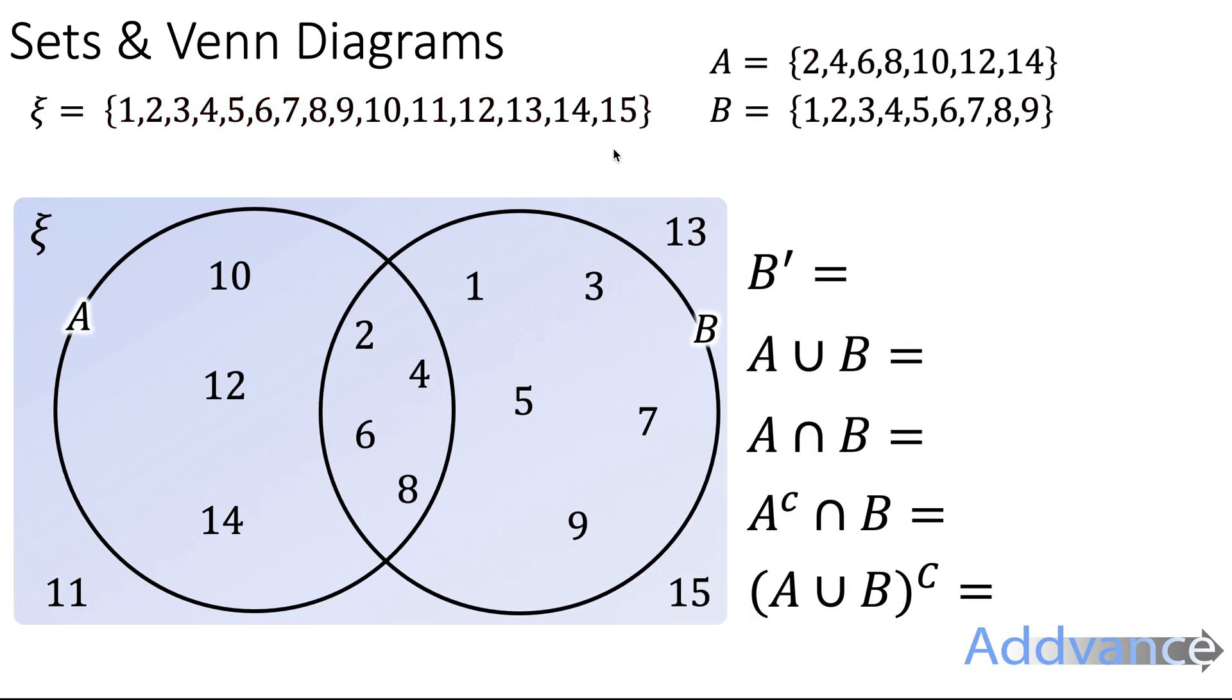So let's try and put these elements into these sets here: A complement, A union B, A intersection B, A complement intersection B, and A union B complement. To find B complement, let's highlight B first, and then we're looking for B complement, so it's everything outside of that. B complement, which is this green part here. So we're going to choose all the elements outside of B, which are 10, 11, 12, 13, 14, and 15.